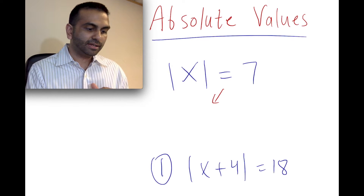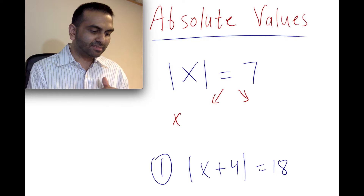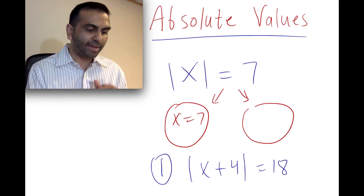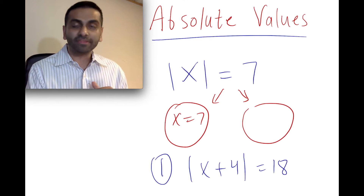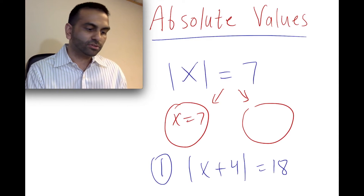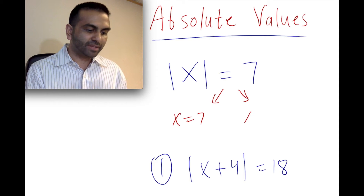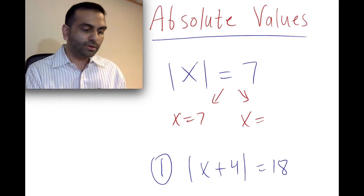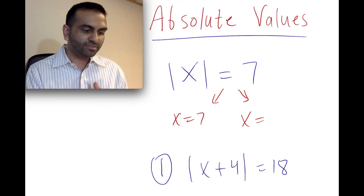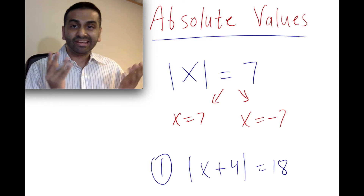So here it's pretty straightforward. You just set this as x equals seven. One of the two things you split it up as is literally ignore the absolute value — so the problem without the absolute value. The other version is also ignore the absolute value, but whatever it equals, make it equal the negative version of it. So instead of equaling seven, it's going to equal negative seven.